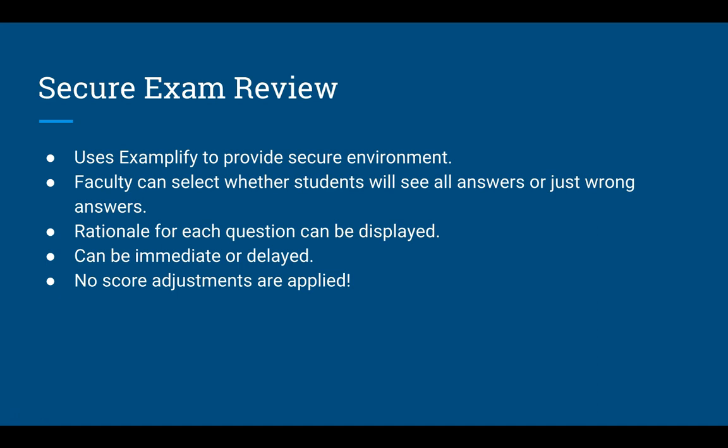There are two ways to do a secure exam review: immediately after the students finish their test in that same sitting, or on a delay where you determine a time for students to go back into Exemplify and do the review. One thing to keep in mind is that because all of this is set up when you post the exam, there's no opportunity to do score adjustments in a way that students are going to see them in a secure exam review. So even if you go into the portal and do some score adjustments, that information is not getting to the students through the secure review. The only way to get that sort of information to the students is through a Strengths and Opportunity report. This is really just a review of their raw score — you haven't made any corrections at this point.